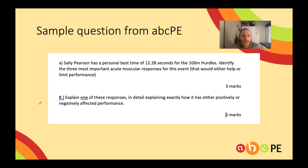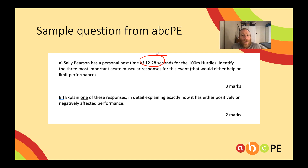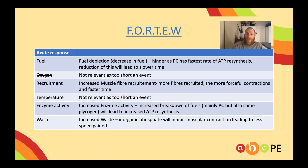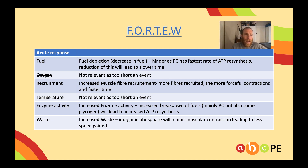Here's a sample question from ABCPE. The most important thing to note is that the event goes for 12.28 seconds, so we're thinking about anaerobic — in particular ATP-PC system — acute muscular responses. We'd have the FORTU acronym down the side and cross off the things that aren't super relevant. For an ATP-PC dominant event, the two least relevant acute muscular responses are oxygen consumption (because it's anaerobic) and temperature (it's too short an event to get very hot).